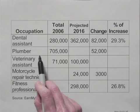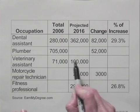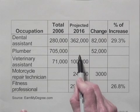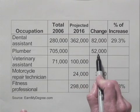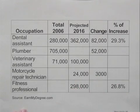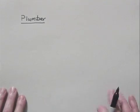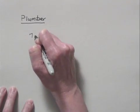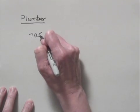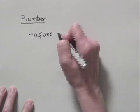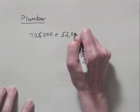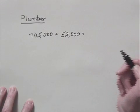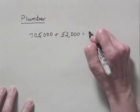So let's go to the plumber's numbers. The first thing that we want to find is the projected number of jobs in 2016. We know that it's going to be 52,000 more than the number in 2006, so we can add to fill in that part of the table. We would add the number of jobs in 2006, which was 705,000, and the projected increase, which is 52,000. That gives us a total of 757,000.